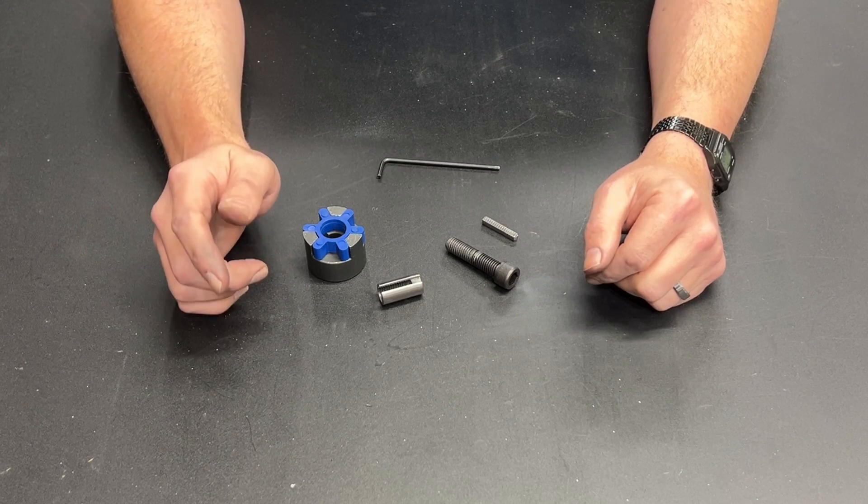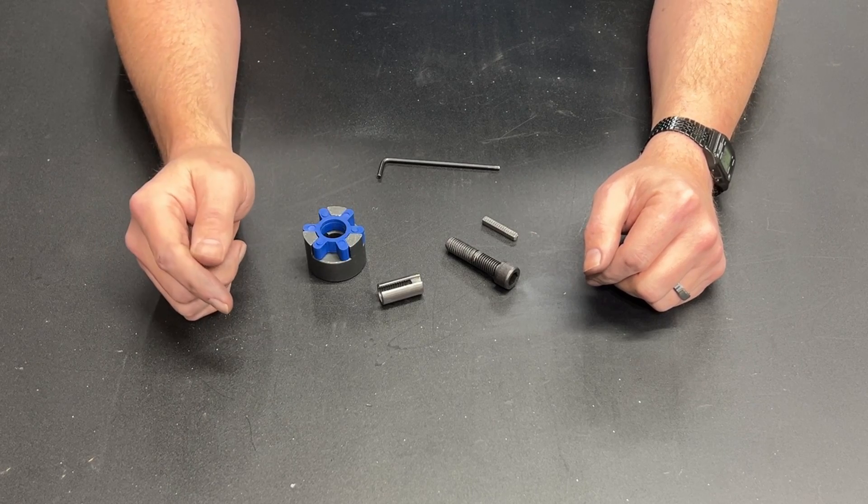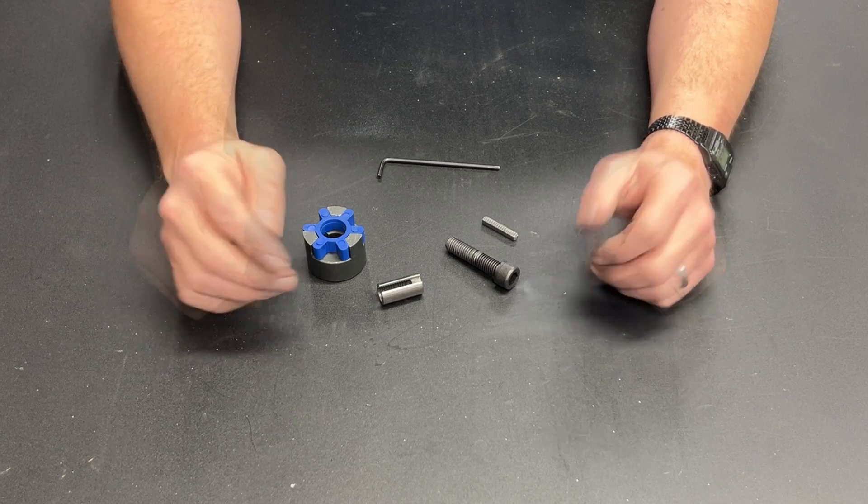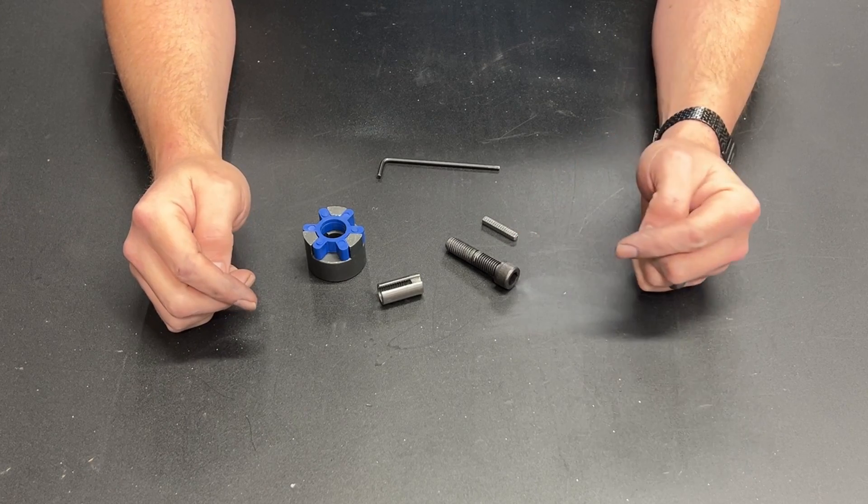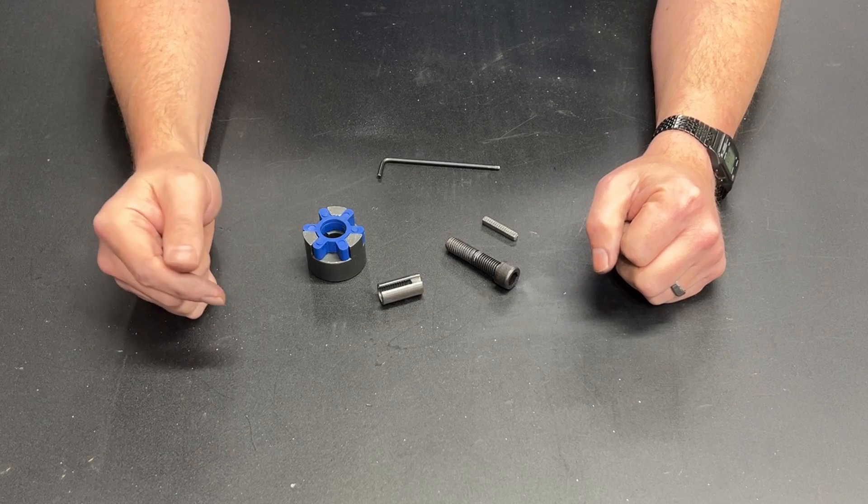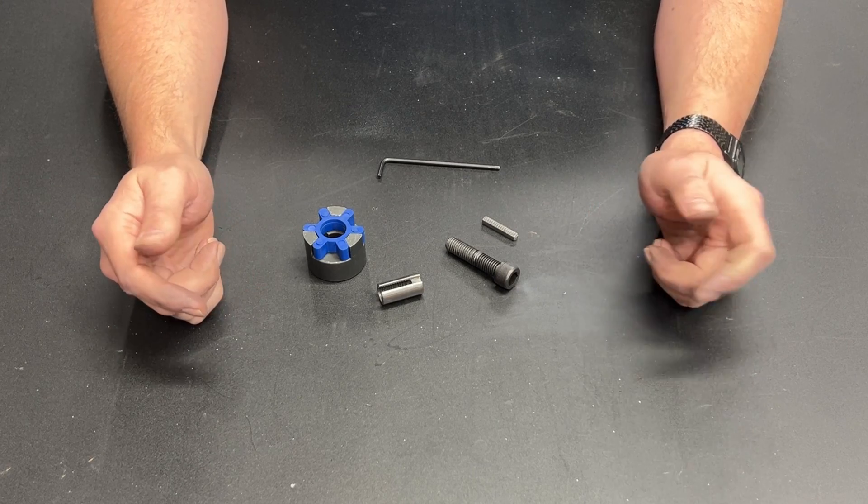I didn't really want to do that. I wanted something that I could lock or unlock as I saw fit without damaging the threads. It wouldn't take much to tap a collar at 12 millimeters and then put a set screw in it. But that set screw is going to bind into the threads and damage them.